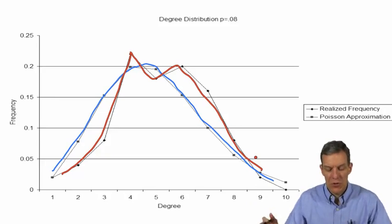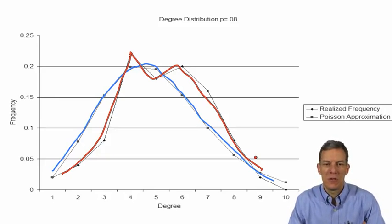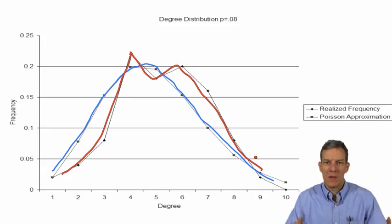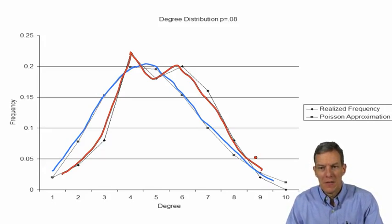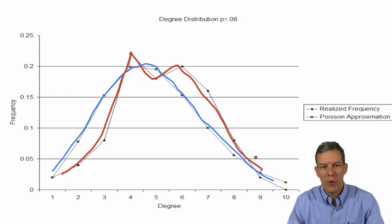If you had more nodes and looked at a random graph on a larger set, these things would start to coincide even more. But again, the Poisson gives us a reasonable approximation of what we would have expected to be realized. This is a Poisson distribution.